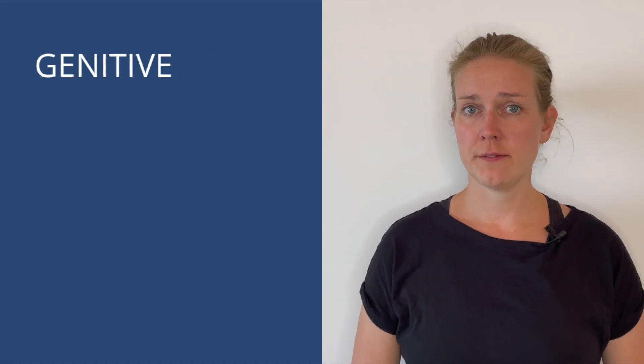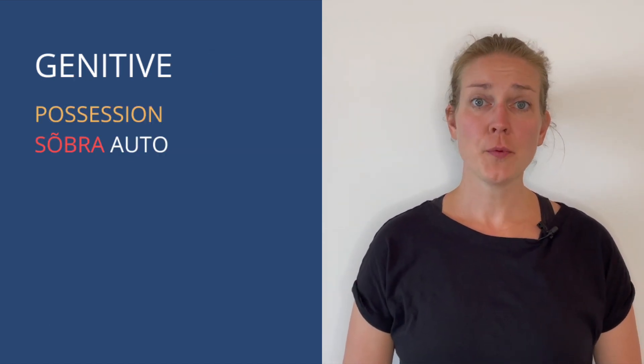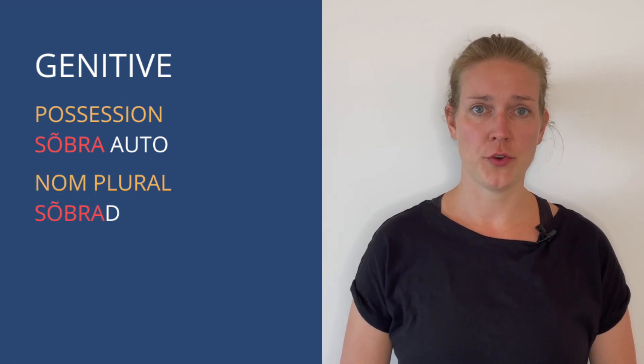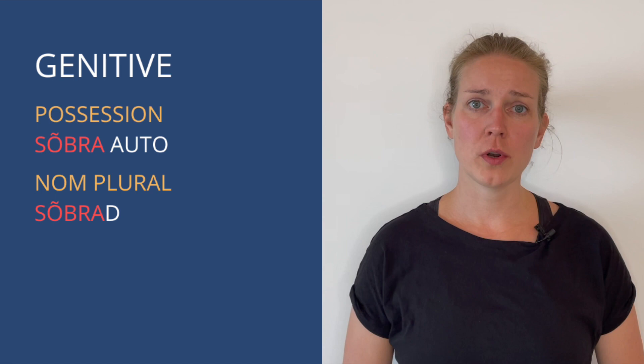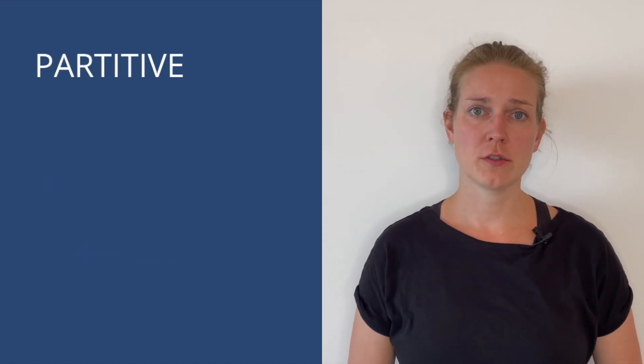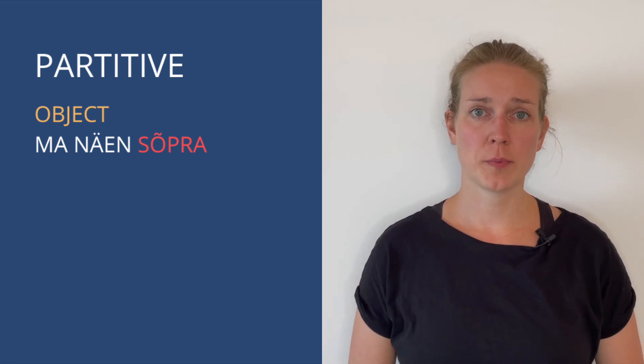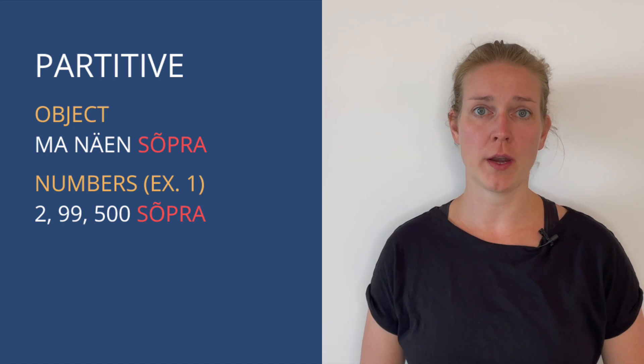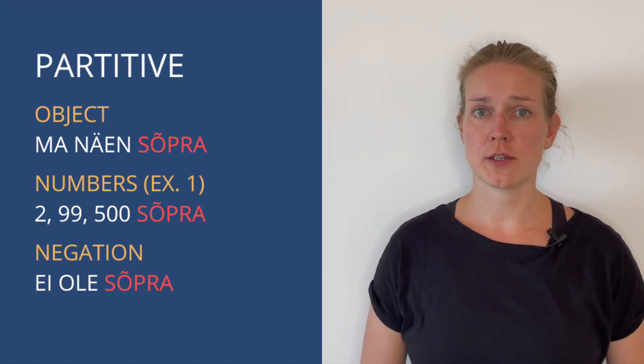To summarize the three first and only grammatical cases in Estonian: nominative is used with a subject. Genitive is a possessive case, but we also use genitive to form the plural of nominative and to form all the other 11 cases in Estonian. Partitive is used with an object. We also use partitive with all the numbers except one and with the negation. The complicated part about these three cases is that you cannot really predict the forms — they can be different depending on the noun.